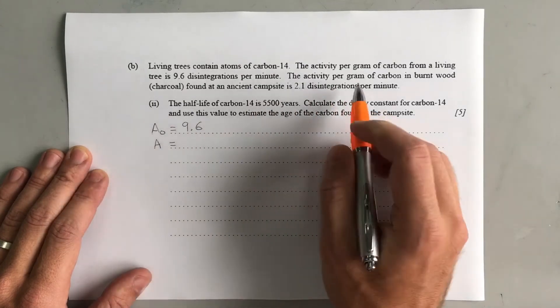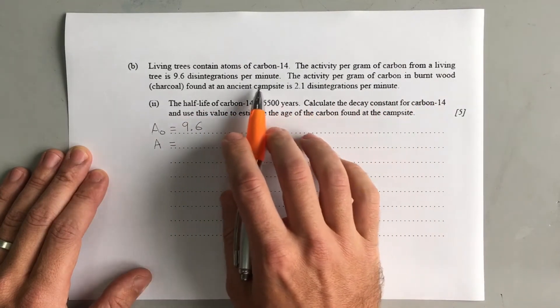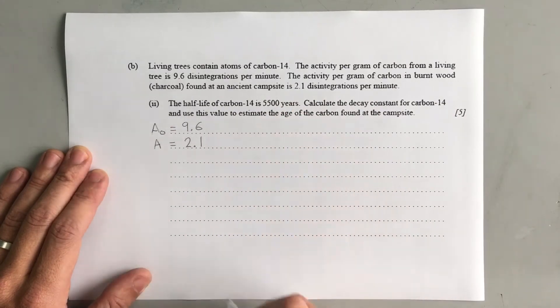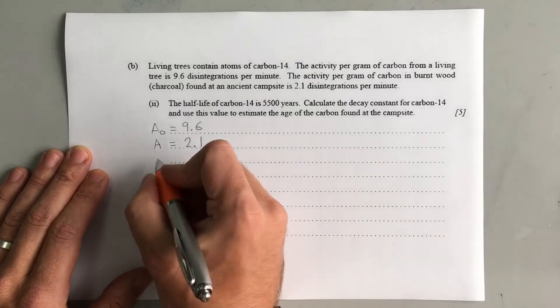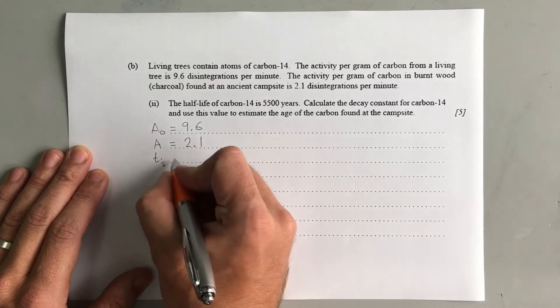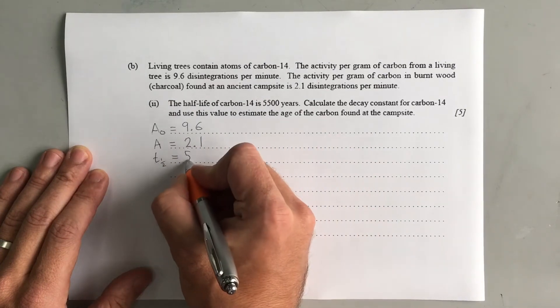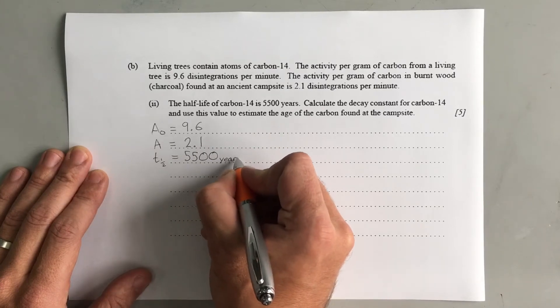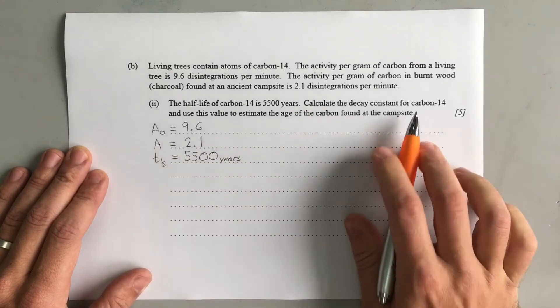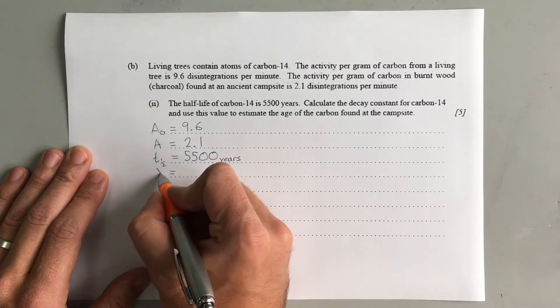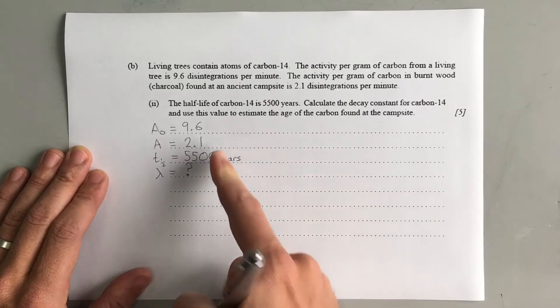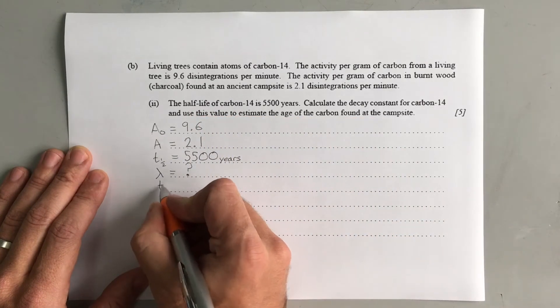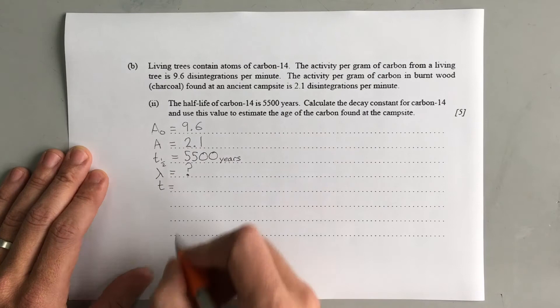We've also got the half-life, 5,500 years. Again, we'll talk about units in a second. And we want to find out the decay constant, and we need to use this value to estimate the age of the carbon found at the campsite.